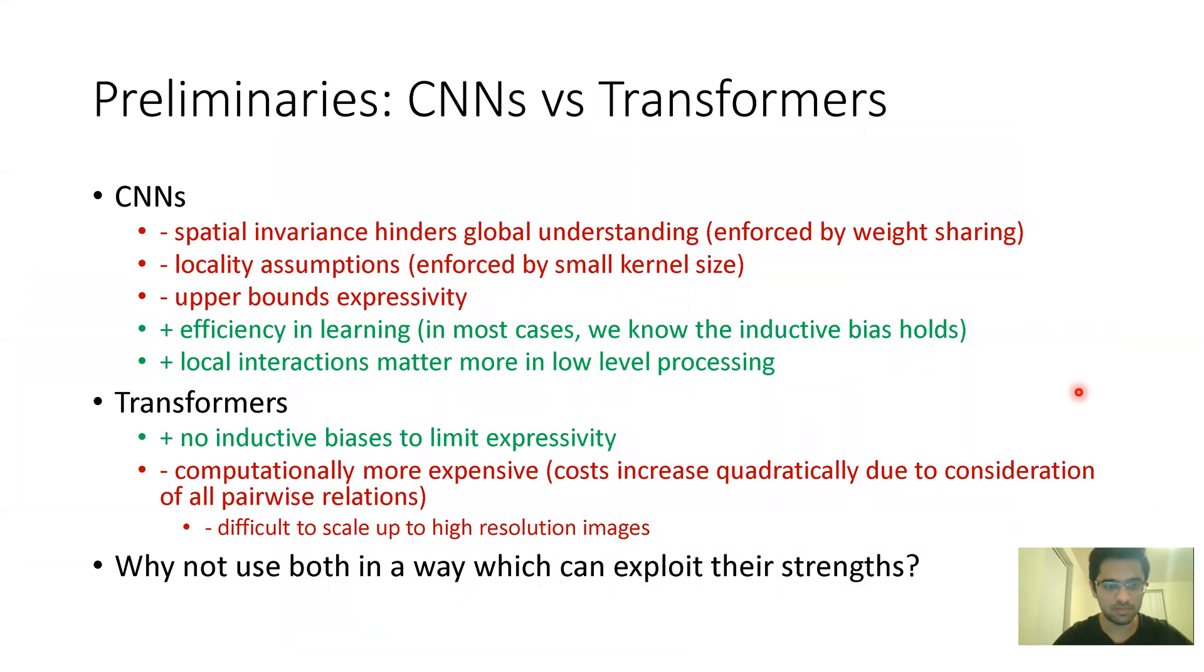Before I talk about how they accomplish this performance, I want to compare transformers and CNNs. Some disadvantages of CNNs are they have two strong inductive biases. For example, spatial invariance and locality, which basically upper bound the expressivity of the model and limit performance. However, these assumptions mostly hold in most cases, so this makes learning efficient because the model already has its prior knowledge encoded in its structure. And we know local interactions, which is what CNNs encourage, matter more in low-level processing, which also adds to the efficiency.